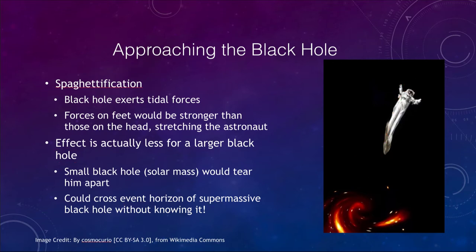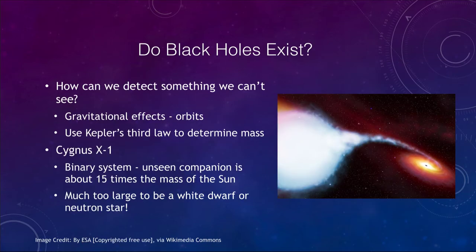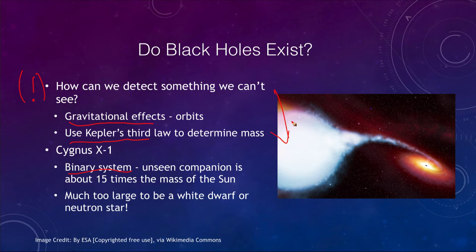So do black holes exist? How do you detect something that you can't see? We can look at gravitational effects in orbits and then use Kepler's third law to determine the mass. Cygnus X-1, pictured here, is an example of this. It is a binary system and we can do calculations based on knowing what type of star this is and determining how much mass has to be present. What we find is that the unseen object must be 15 times the mass of the Sun.